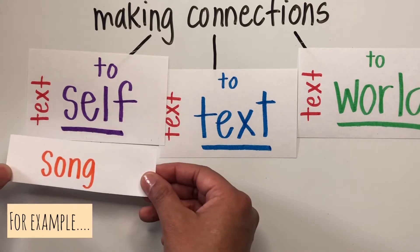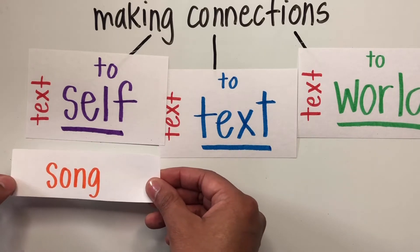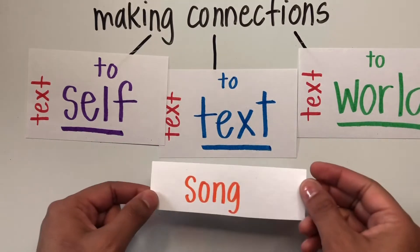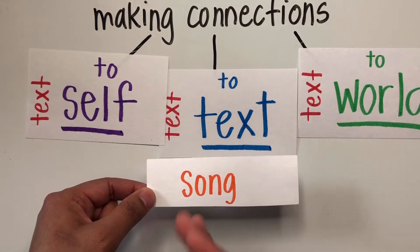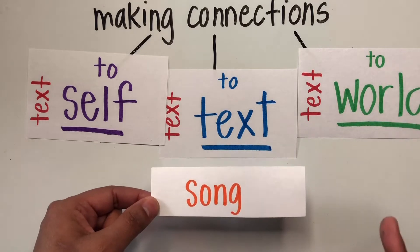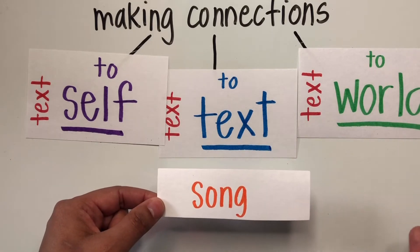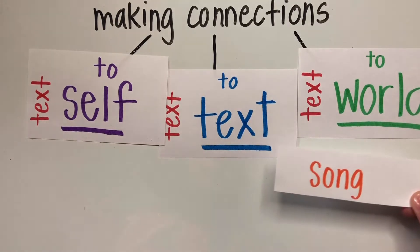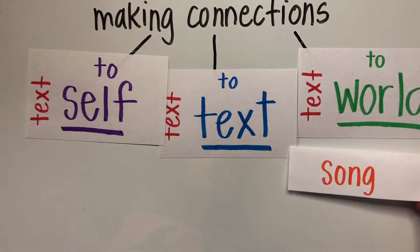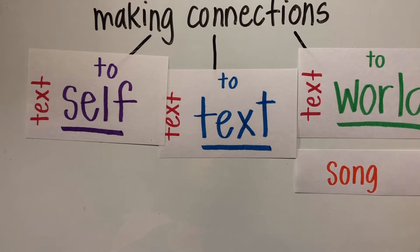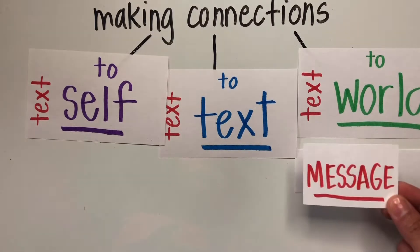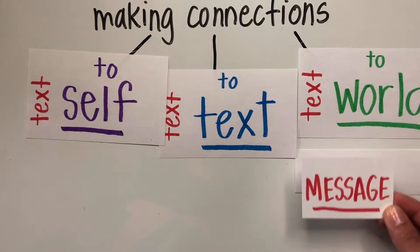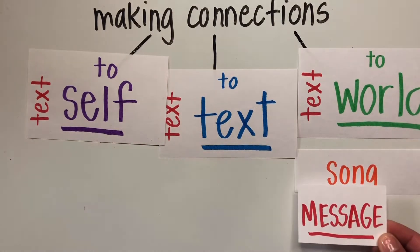I can connect a song to myself and relate to the song and try to connect how the song relates to me. I can take the same song and compare it to another song. How is this song similar to another song? Perhaps in the rhythm, in the music, the lyrics, or even the artist. And then I can take the song and connect it to what's happening around the world. Think about the message — what is the message of the text, the song? How can I connect it with what's happening around the world?